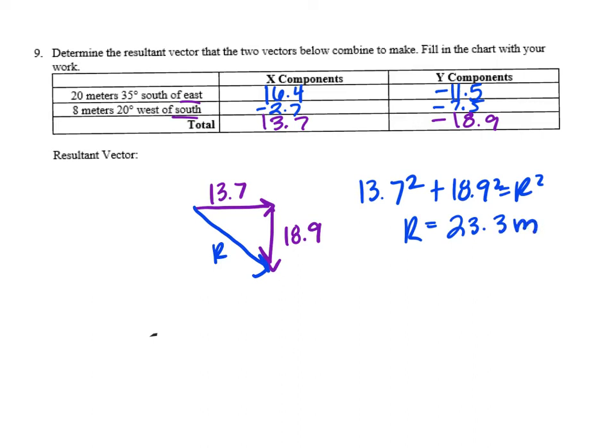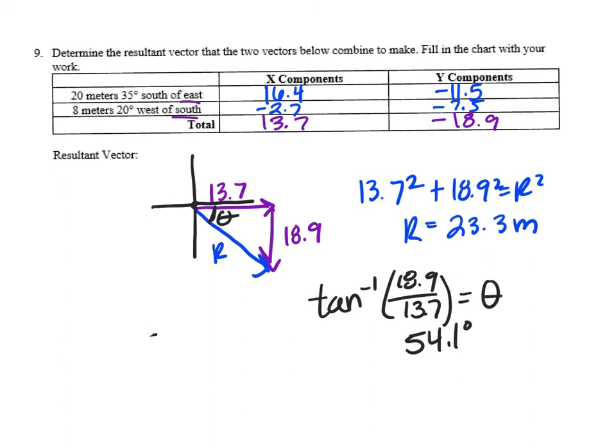Then we want to find the direction that it's going. If it helps you, draw this right triangle on a coordinate plane. You're starting from the origin, you want this angle right here. From here you're going to use inverse tan of 18.9 over 13.7. You're going to get 54.1 degrees.